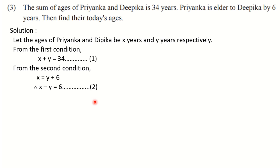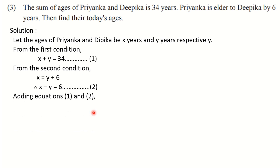The important work of framing the equations is done. Now the next thing is to solve these two equations. Observe the coefficients of variable X — the coefficients are equal: 1 and 1. So either we can add or subtract. If we want to eliminate X we subtract; if we want to eliminate Y we add. Addition is always the better option since subtraction requires changing signs. So we are adding equations 1 and 2.